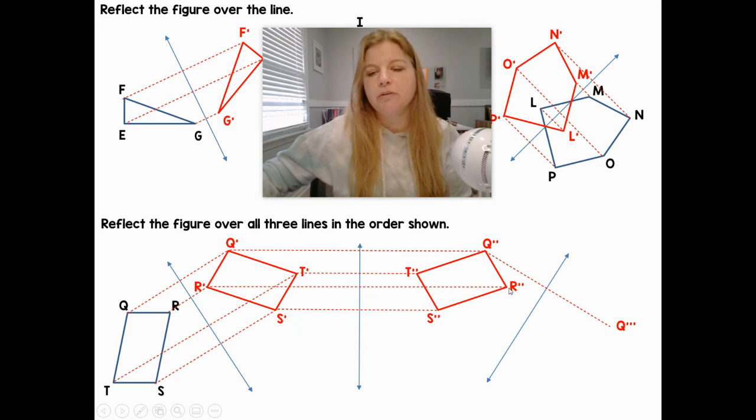Creating a perpendicular from R double prime to my reflection line, measuring that distance and duplicating it on the other side to get R triple prime. Same with S triple prime and T triple prime.